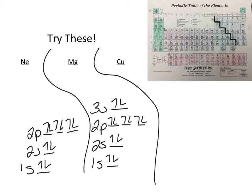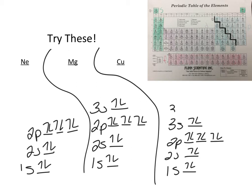So now let's try copper. So I have 1S, one orbital, two electrons. 2S, one orbital, two electrons. 2P, three orbitals, six electrons. 3S, one orbital, two electrons. 3P, three orbitals, six electrons. 4S, one orbital, two electrons. 3D, five orbitals. And I have nine electrons. One, two, three, four, five, six, seven, eight, nine. And that's copper's orbital diagram.